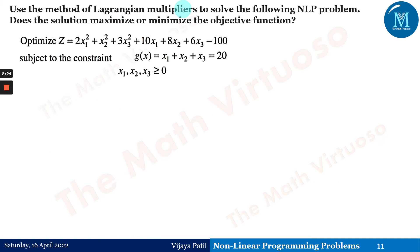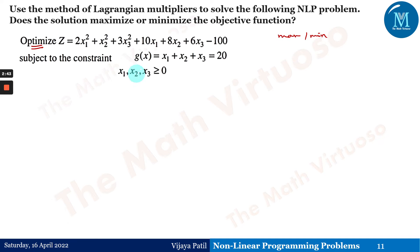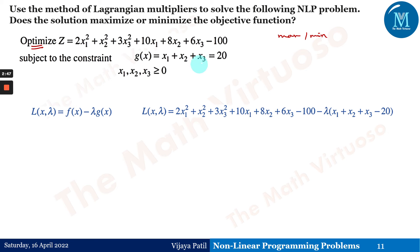Now the question: use the method of Lagrangian multipliers to solve the following NLP problem. Does the solution maximize or minimize the objective function? We have to take a decision whether z at that particular point is going to be maximum or minimum. We have g as the only one constraint, which is an equality constraint.